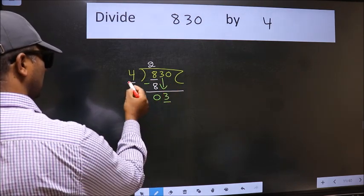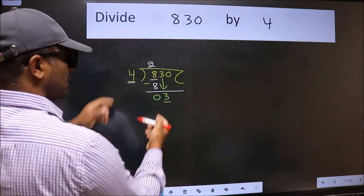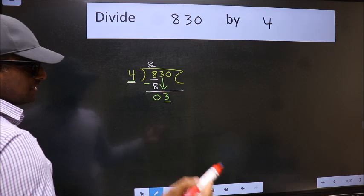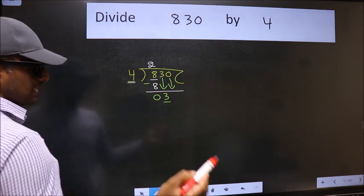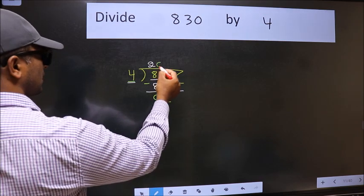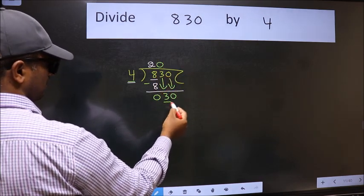Now, here we have 3 and here 4. 3 is smaller than 4. So, we should bring down the second number. And the rule to bring down second number is we should put 0 here. Then only we can bring this number down.